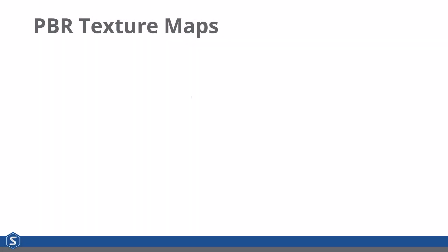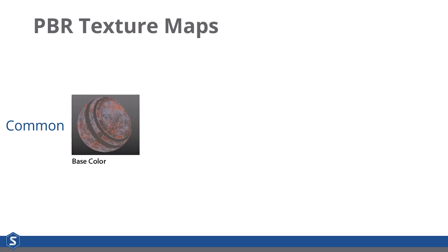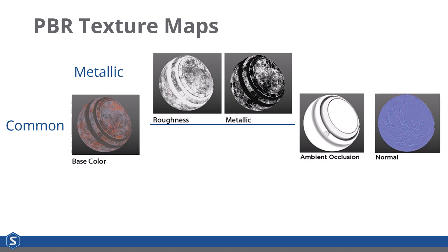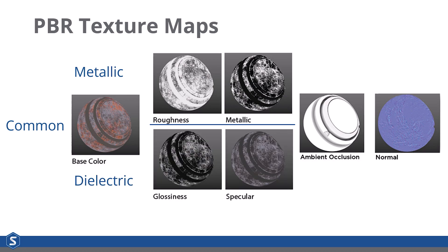The physically-based rendering methodology is formed with five separate texture maps, with two different variants: one for metallic appearances, another for anything else — technically referred to as dielectric appearances. These five texture maps are broken down into the base, ambient occlusion, normal map, and depending on whether you have a metallic appearance or not, roughness and metallic, or glossiness and specular.